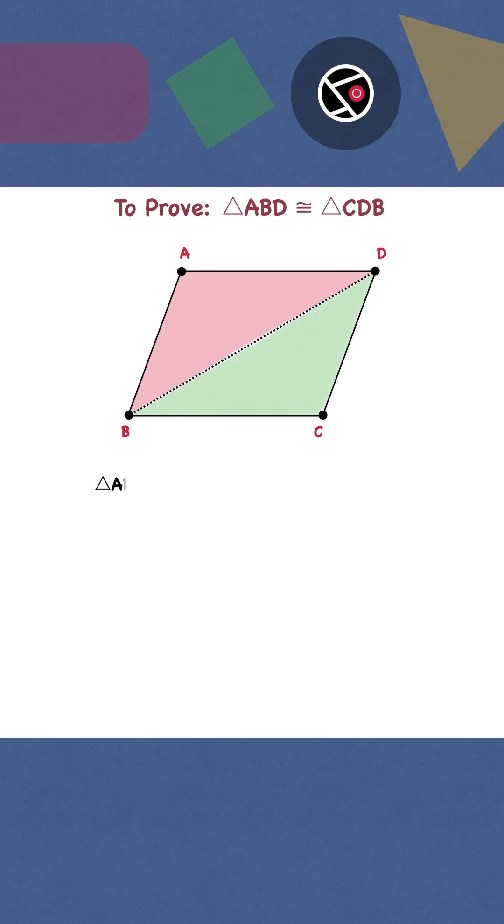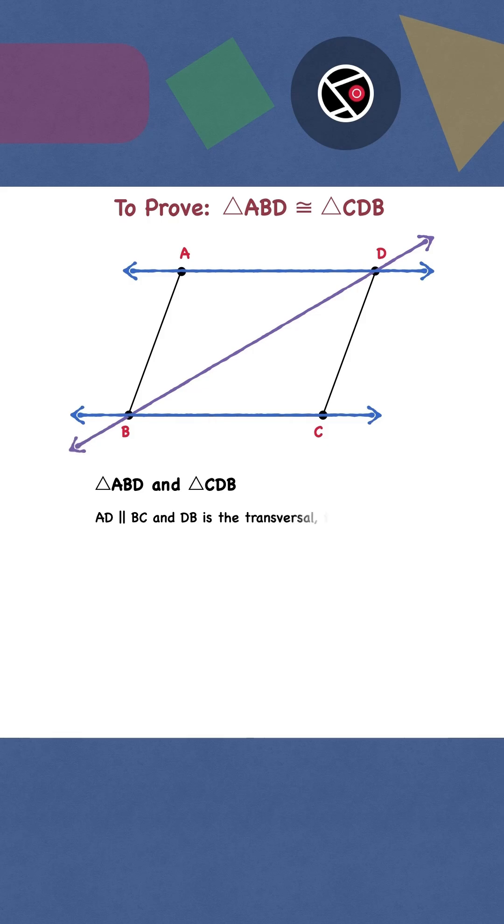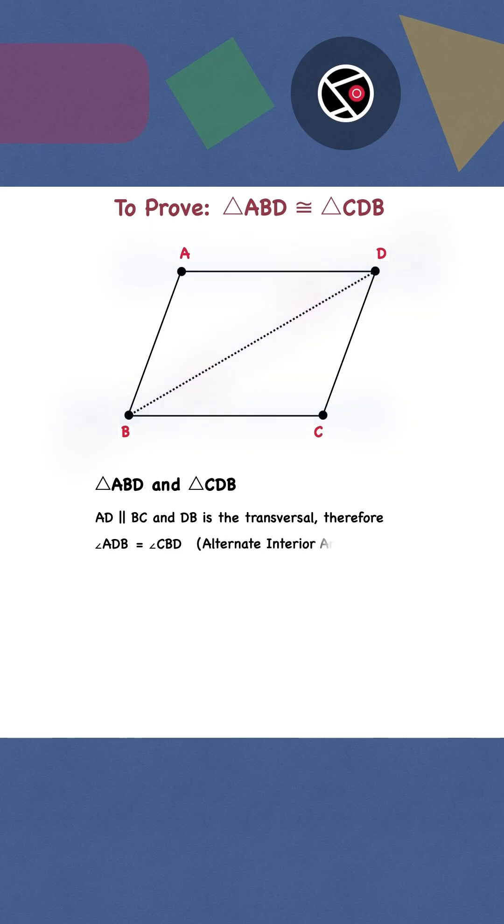For triangles ABD and CDB, AD is parallel to BC and DB is the transversal. Therefore, angle ADB is equal to angle CBD, alternate interior angles.